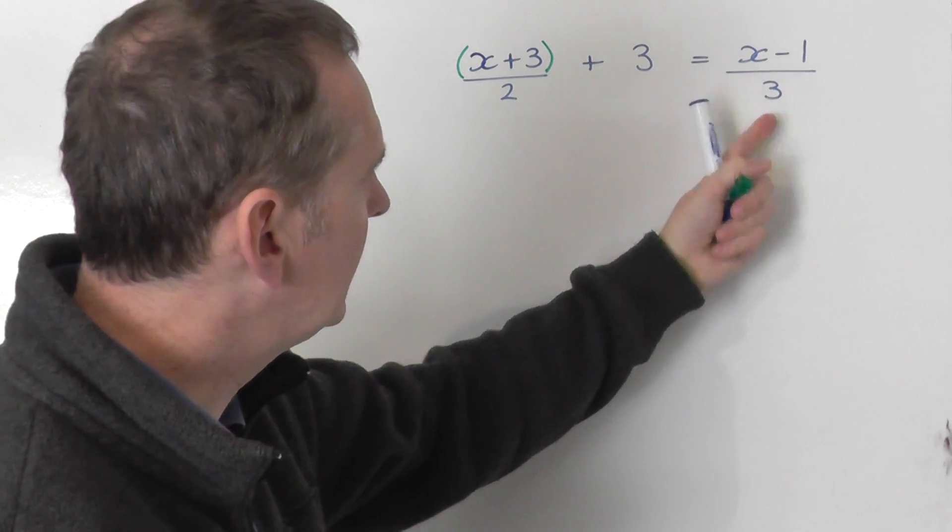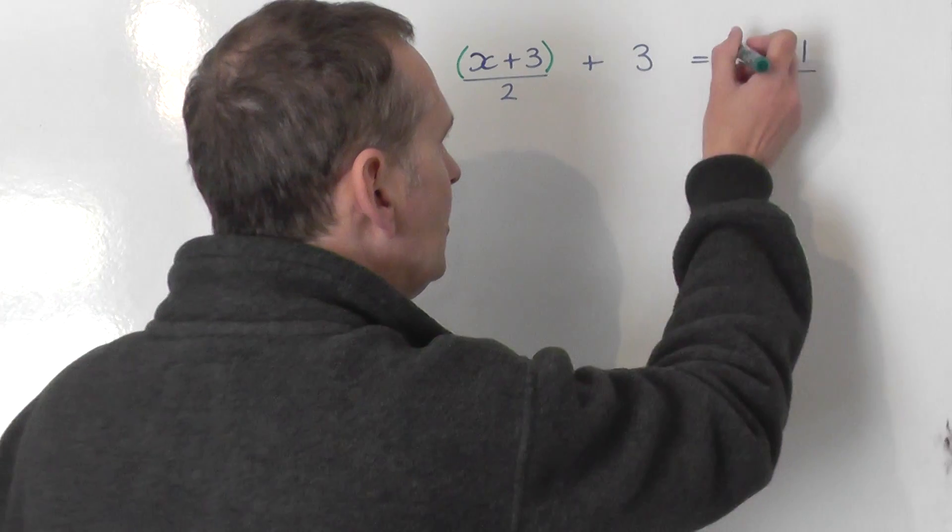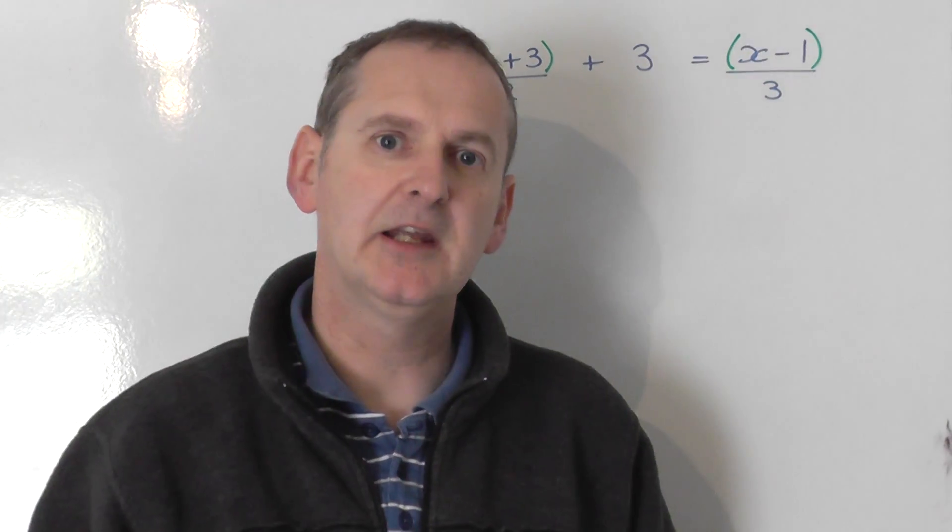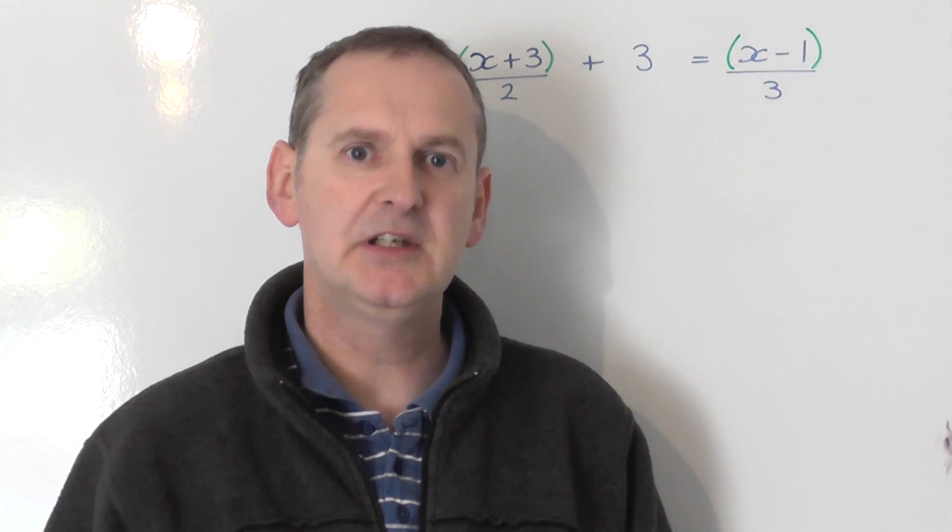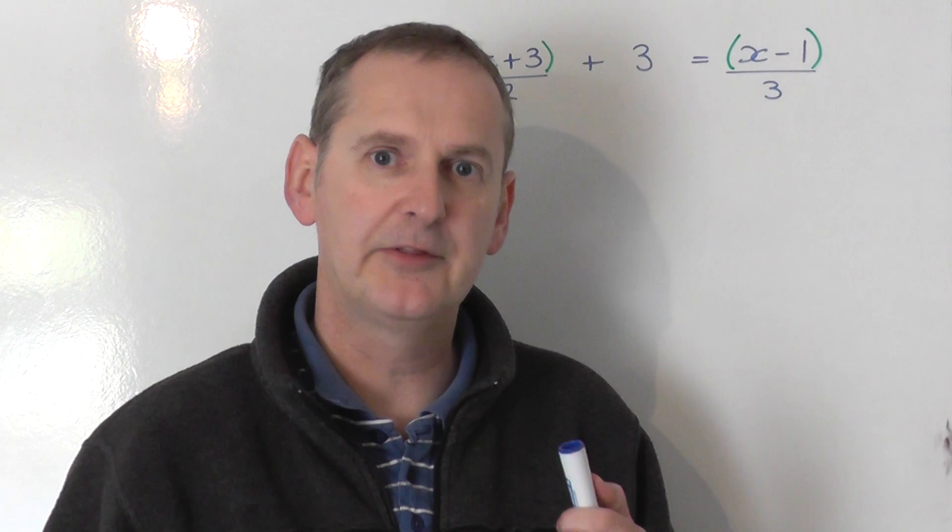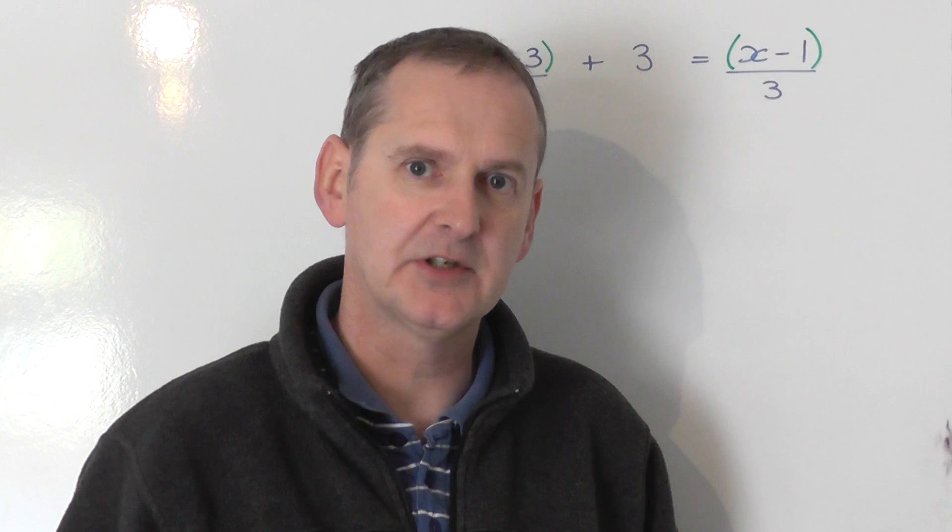The same thing is true for this over here. We've got all of x minus 1 is being divided by 3. You'll find it far easier to work out if you put that bracket in. So what we've actually got, even though it wasn't immediately obvious, is an equation which involves both fractions, that was obvious, and brackets, which was less obvious.